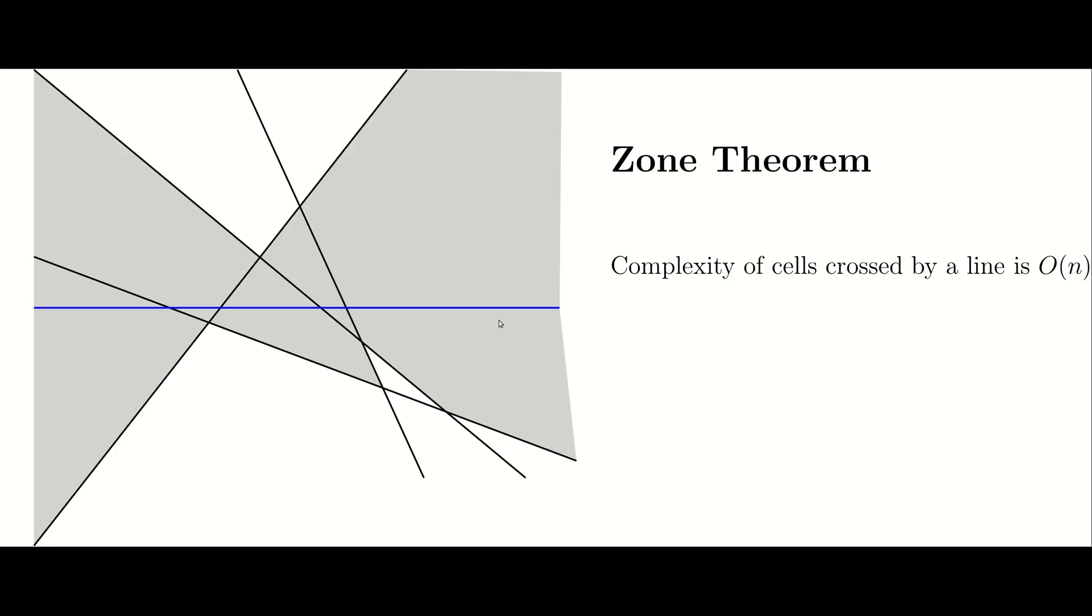The blue line intersects n plus 1 cells in this picture, and the first cell that is intersected by this blue line has linear complexity already. But the zone theorem says that all these n plus 1 cells, all of them together, will have linear complexity as well.